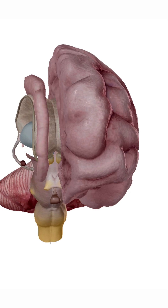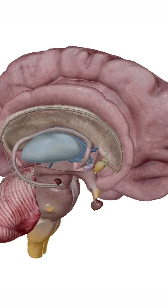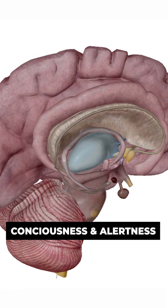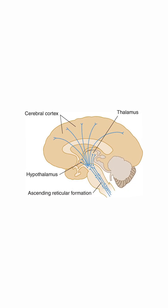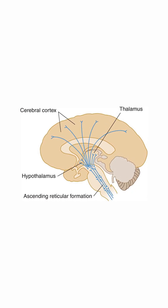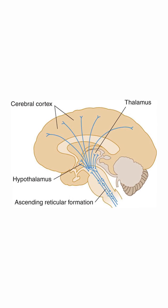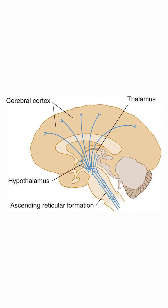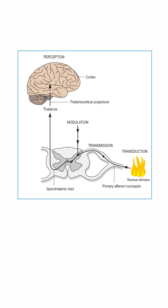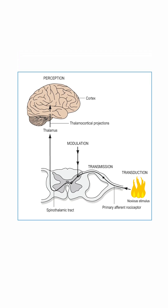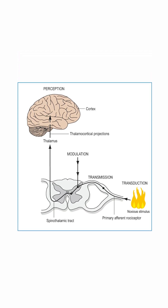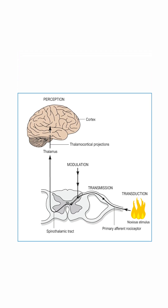The thalamus contributes to consciousness and alertness, particularly through its connections with the cerebral cortex and the reticular formation in the brainstem. Additionally, it is involved in processing pain signals and can modulate the perception of pain.